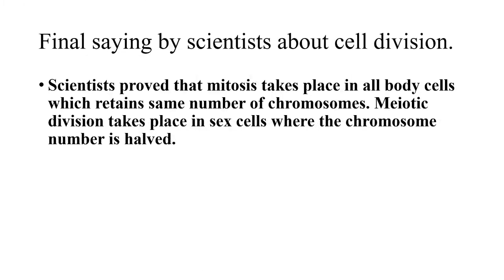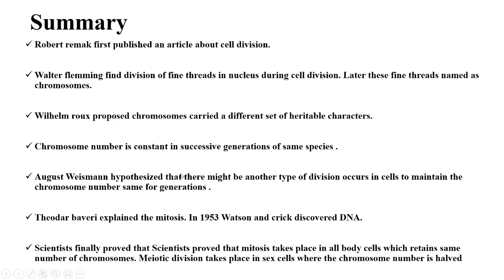Scientists proved that mitosis takes place in all body cells, which retain the same number of chromosomes. Meiotic division takes place in sex cells, where the chromosome number is halved. In body cells, if red blood cells need to be produced, mitotic division takes place in existing red blood cells. In the human body, if sperm cells need to be produced, meiotic division occurs in the male reproductive system, and the sperm cells' chromosome number is reduced to half. This is how cell division occurs in the bodies of living beings.